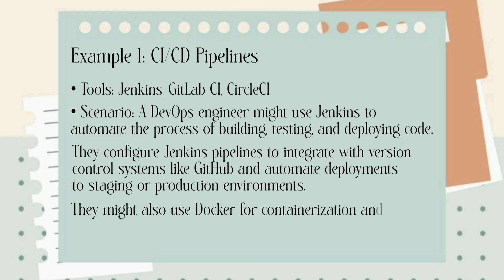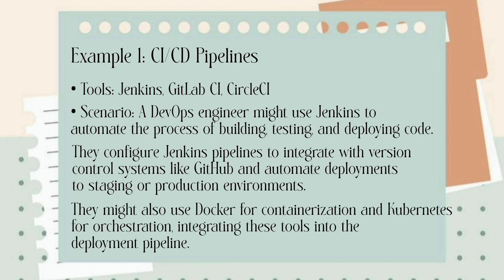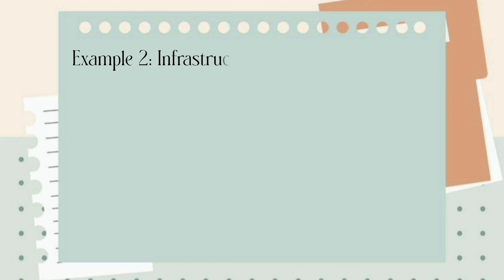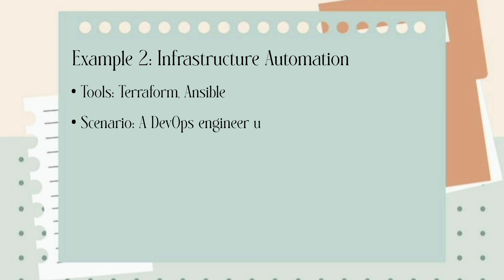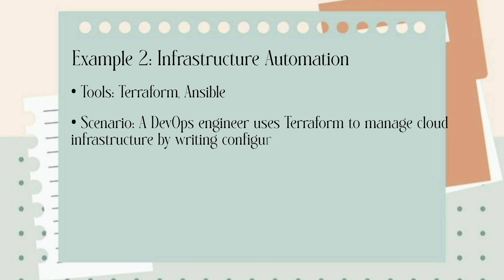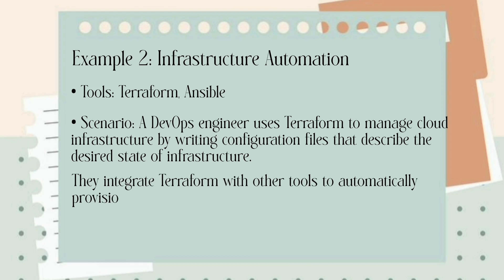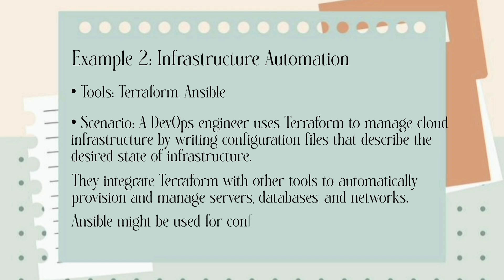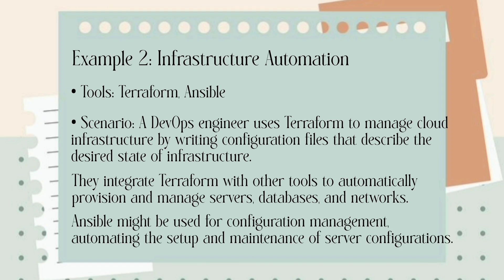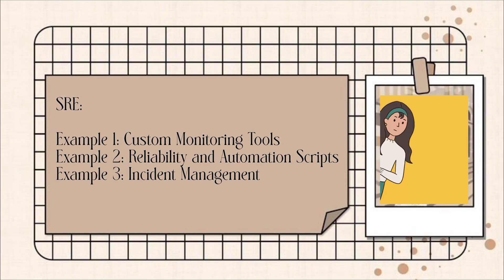They might also use Docker for containerization and Kubernetes for orchestration, integrating these tools into the deployment pipeline. For infrastructure automation, we use tools like Terraform and Ansible. The DevOps engineer uses Terraform to manage cloud infrastructure by writing configuration files that describe the desired state of infrastructure. They integrate Terraform with other tools to automatically provision and manage servers, databases and networks. Ansible might be used for configuration management, automating the setup and maintenance of server configurations.